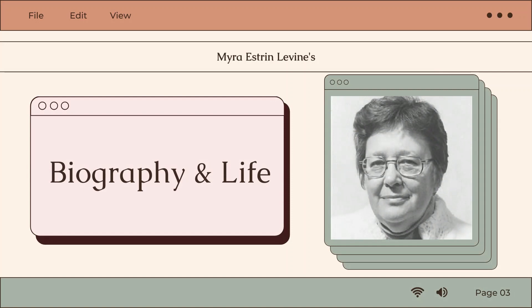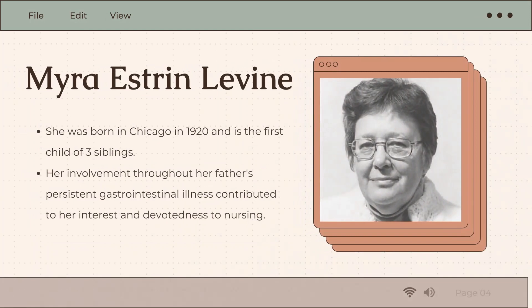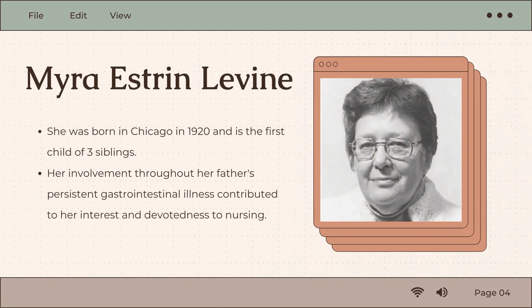First, I will discuss Myra Estrin-Levine's biography and life. Myra Estrin-Levine was born in Chicago in the year 1920 and is the first child of three siblings, having one sister and one brother, and she also held a close relationship with her parents.